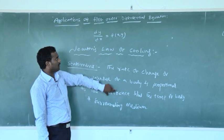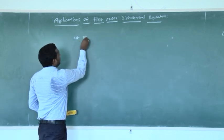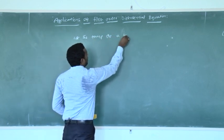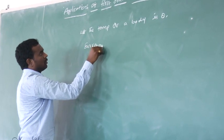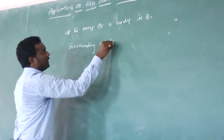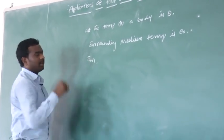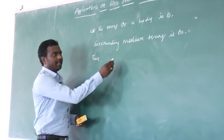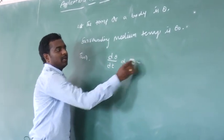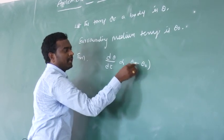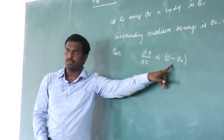Now, how are we using ordinary differential equations in this statement? Let the temperature of a body be theta, and the surrounding medium temperature be theta naught. Then we can write the rate of change of temperature of the body as d theta by dt, which is proportional to the difference between the temperature of the body and the surrounding medium — that is, theta minus theta naught.